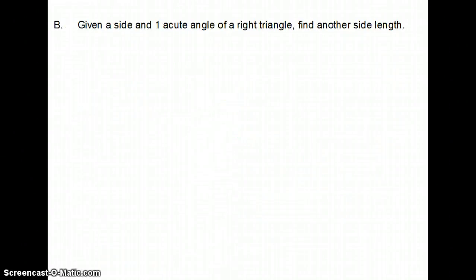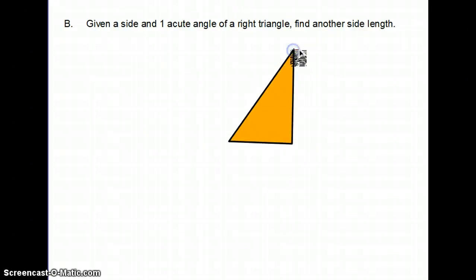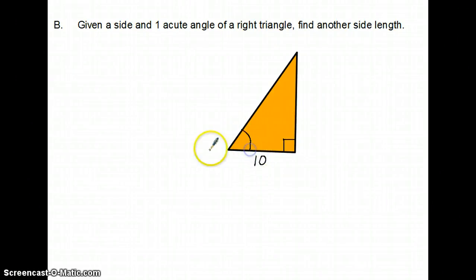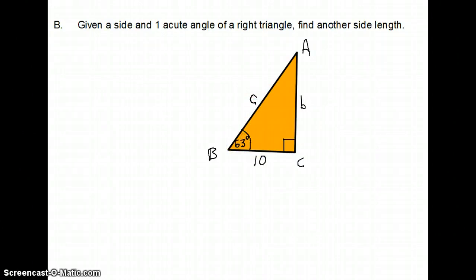The next type of problem: given a side and one acute angle of a right triangle, could you find the other side lengths? We'll make a different triangle. We knew that one side was 10, and the angle here — I'll call this angle C — was 63 degrees. The question is: find another side length. Once we knew one side, we could find another with Pythagorean theorem, but we're going to use trig to find C first, and then use trig to find B without using C.